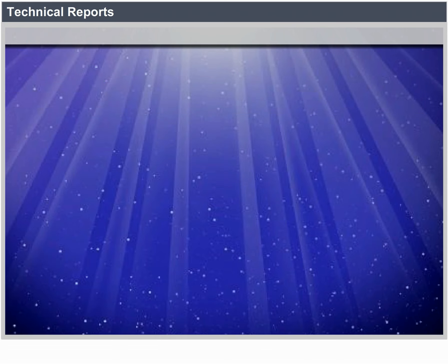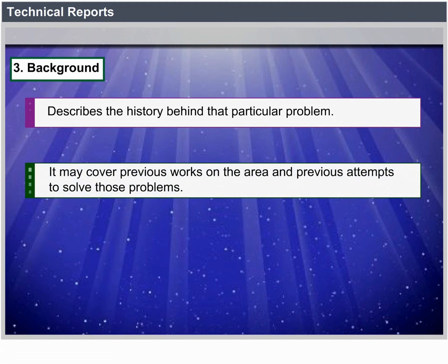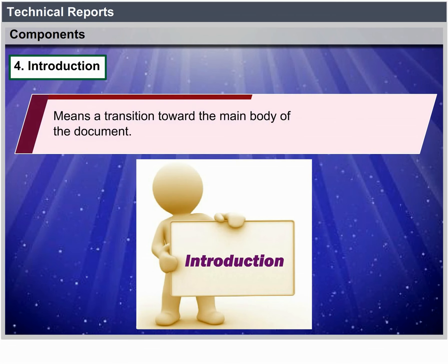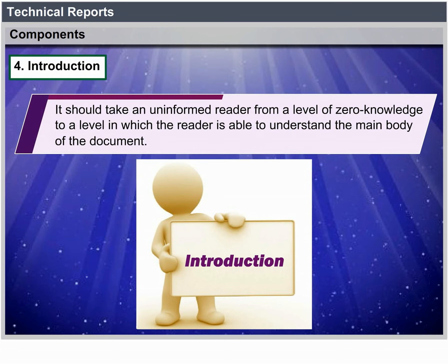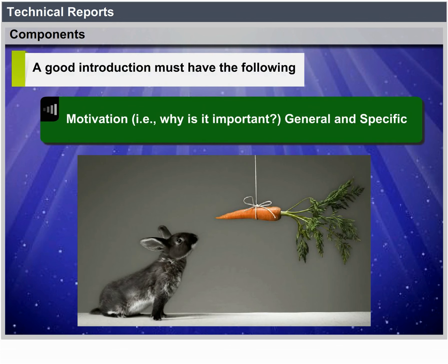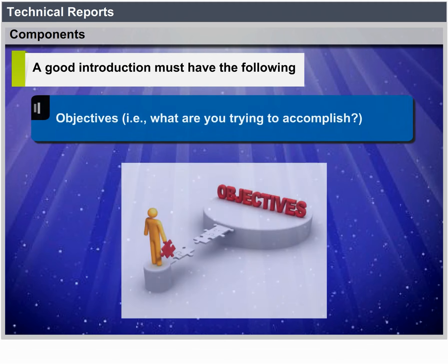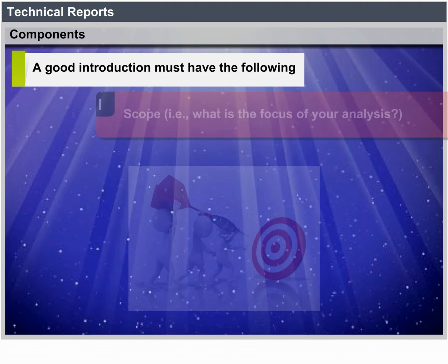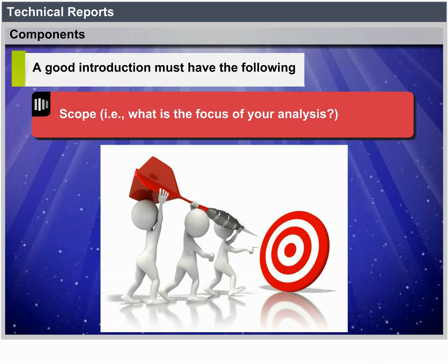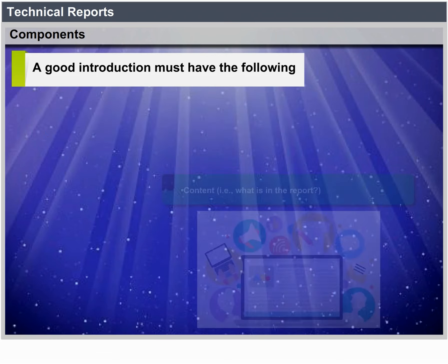Background: Describes the history behind the particular problem; it may cover previous works on the area and previous attempts to solve the problem. Introduction: A transition toward the main body of the document, taking an uninformed reader from zero knowledge to a level where they can understand the main body. A good introduction must have: motivation (why it is important — general and specific), background (history of the issue), objectives (what you are trying to accomplish), scope (what is the focus of your analysis), limitations (constraints you faced), content (what is in the report), and organization (how the report is organized).